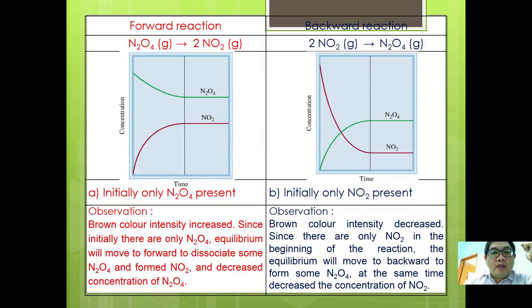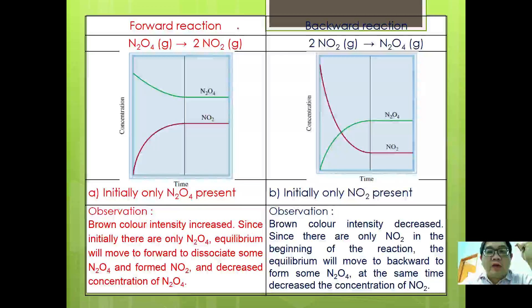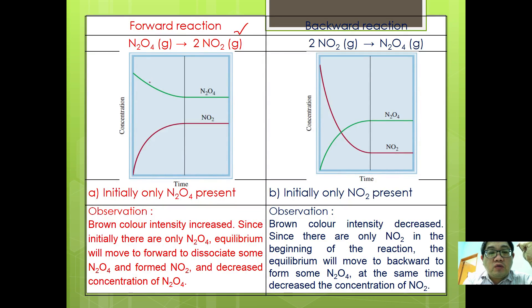For example, if N2O4 were to become NO2, from the angle of the equation shown, the reaction is what we call a forward reaction in reversible reactions. As time passes, concentration of N2O4 will decrease, and concentration of NO2 will increase. In other words, you see more brown color intensity at the end of the day.